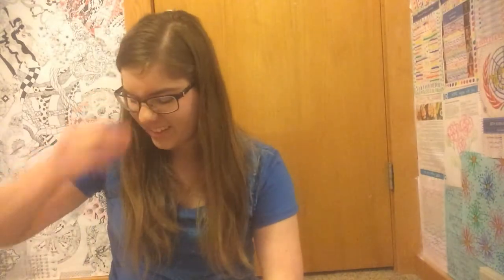Darwin noticed that the characteristics of many organisms were remarkably well suited to their environment — if it's cold, you have fur; if it's warm, you don't. Darwin was most interested in variations of: tortoises and their shell shapes, finches and their beak shapes, and giant fossil armadillos. The religious theory states all organisms were created by a supreme being and were always this way.